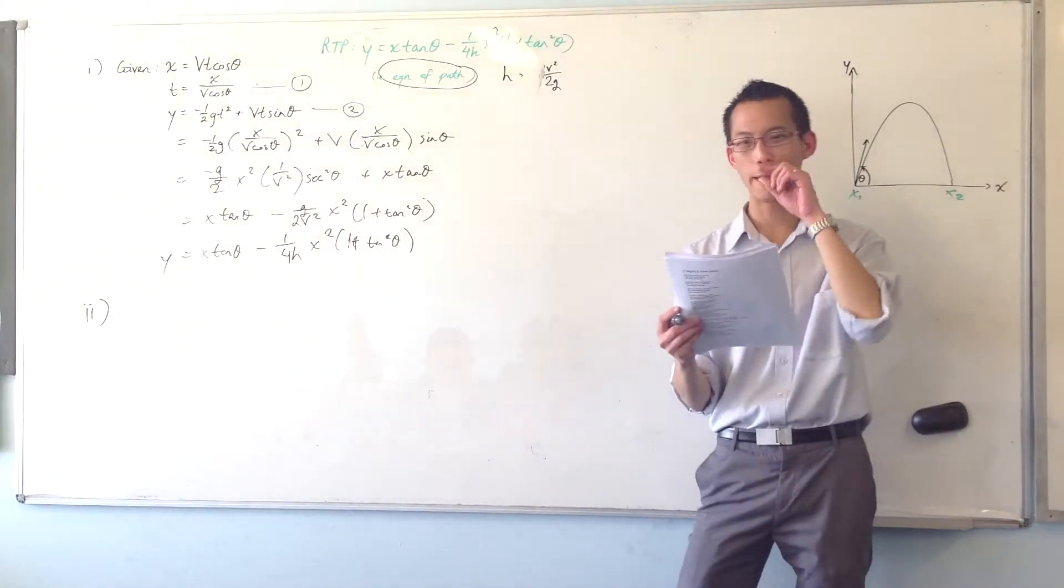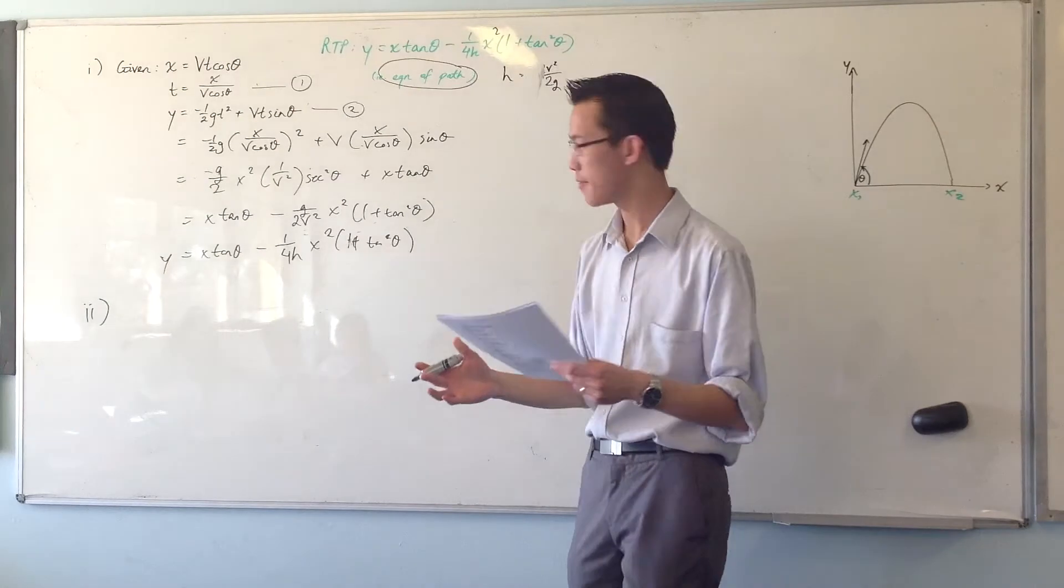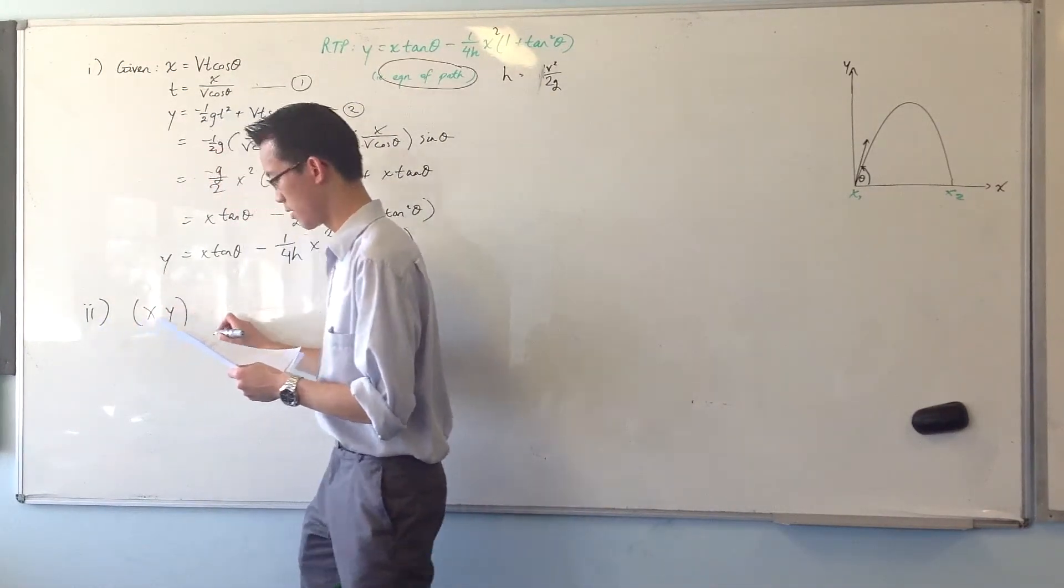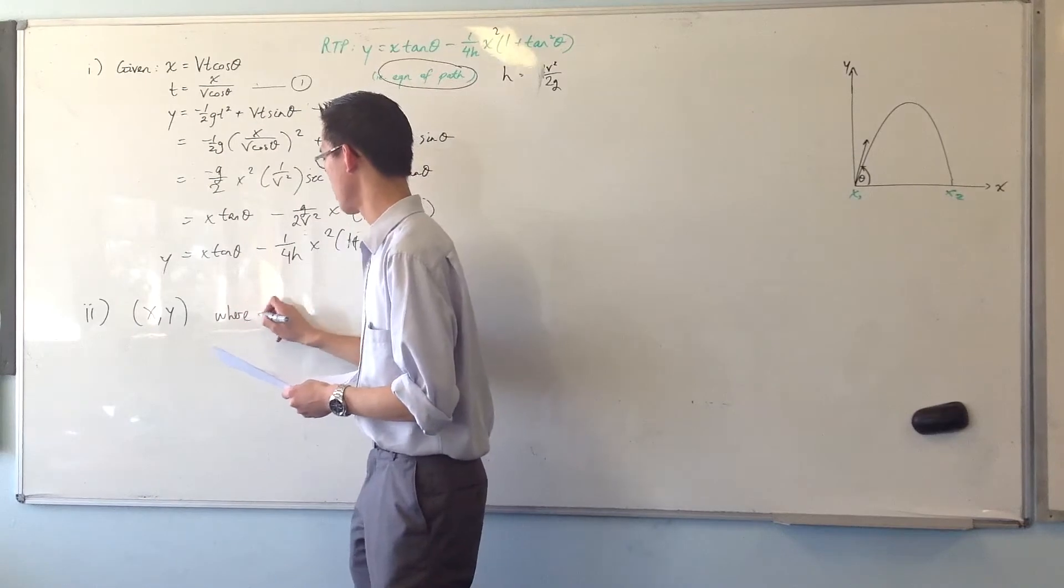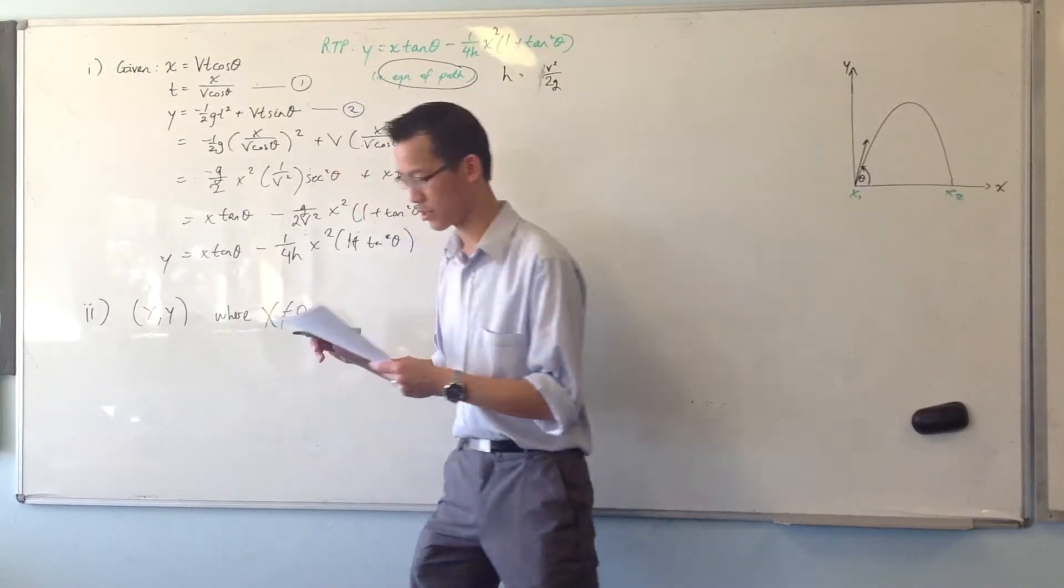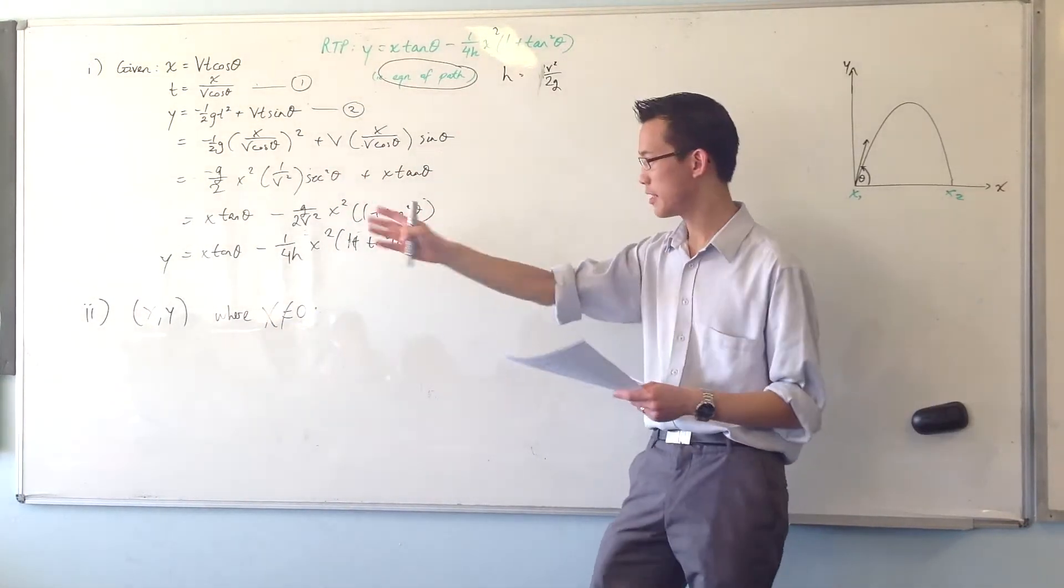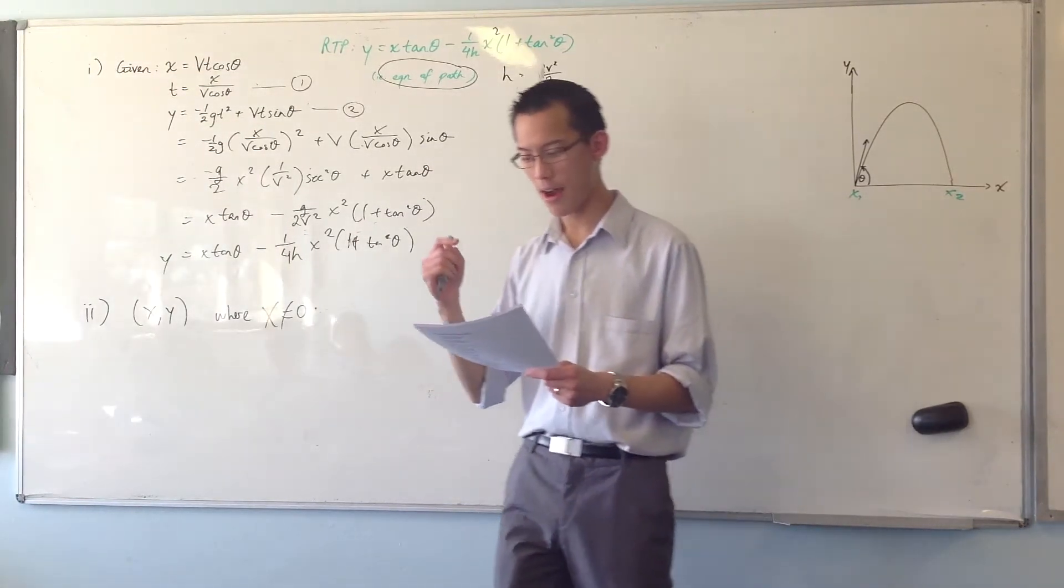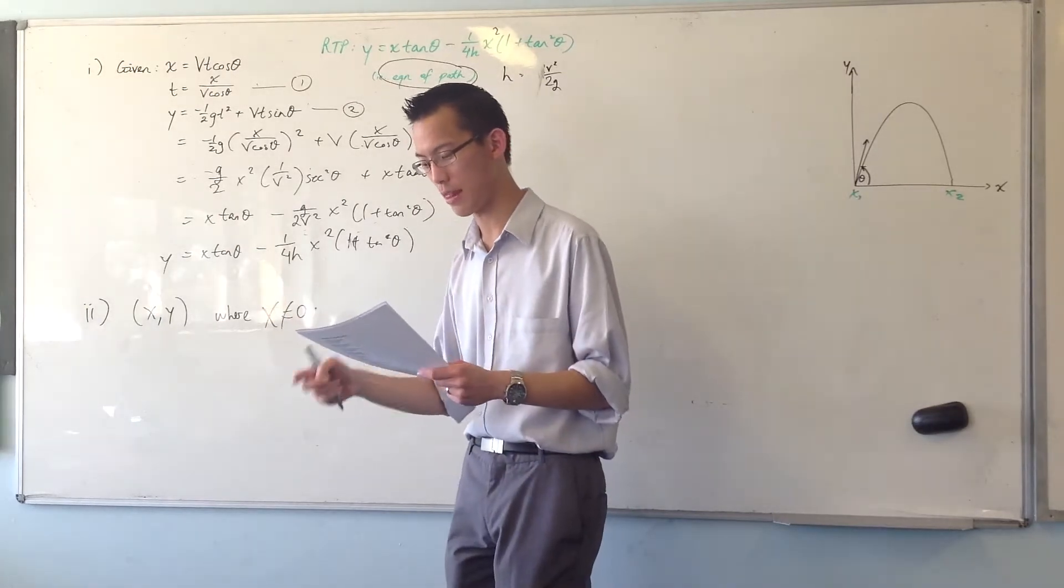Part of the problem is when you look at it, it says show that there's a point (x,y) where x is not zero. So make the transition. This x and this y, they're constants. It can be hit by firing at two different angles, θ1 and θ2.